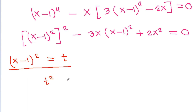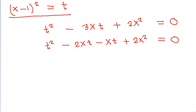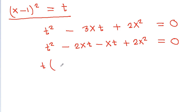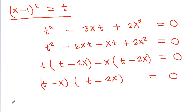If we take (x - 1)² = t, then we get t² - 3xt + 2x² = 0. And -3xt is -2xt - xt, so t² - 2xt - xt + 2x² = 0. Taking t common: t(t - 2x) - x(t - 2x) = 0, giving (t - x)(t - 2x) = 0. So either t = x or t = 2x.